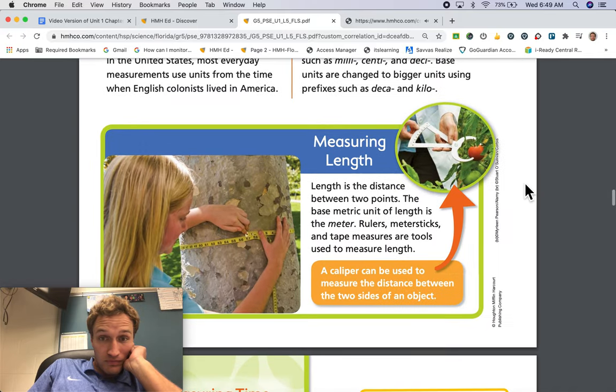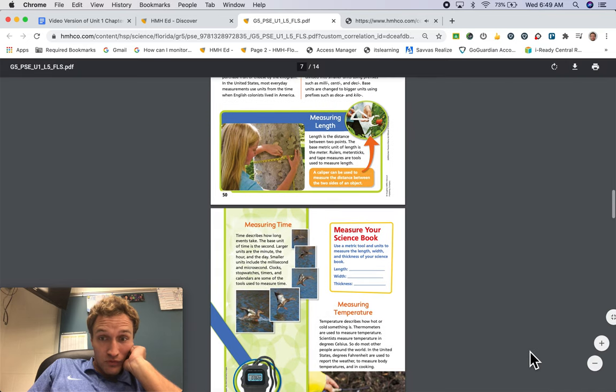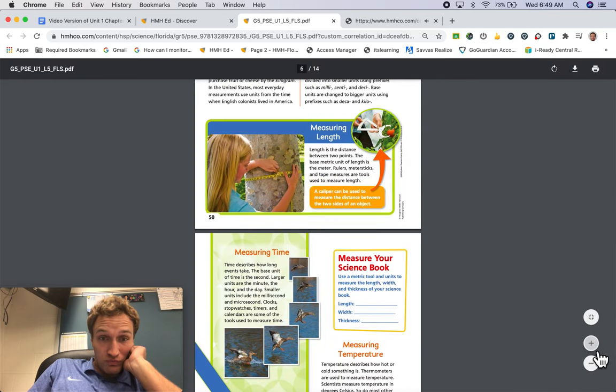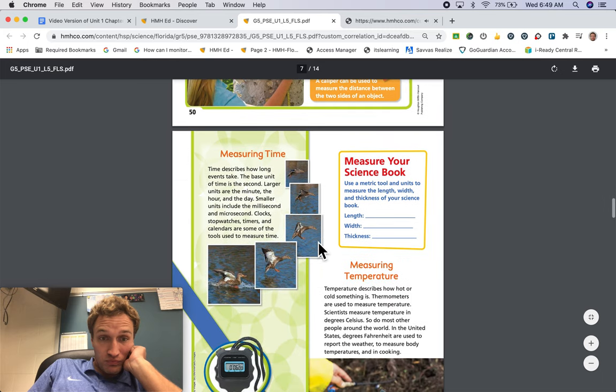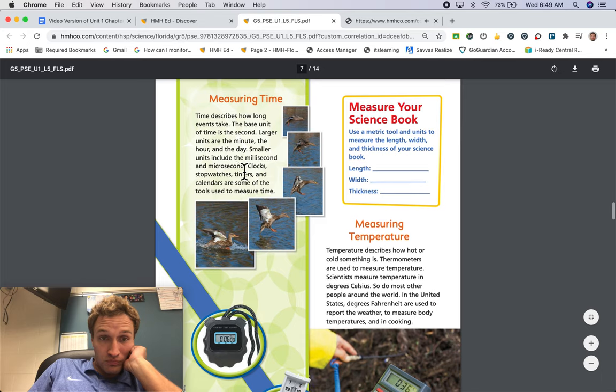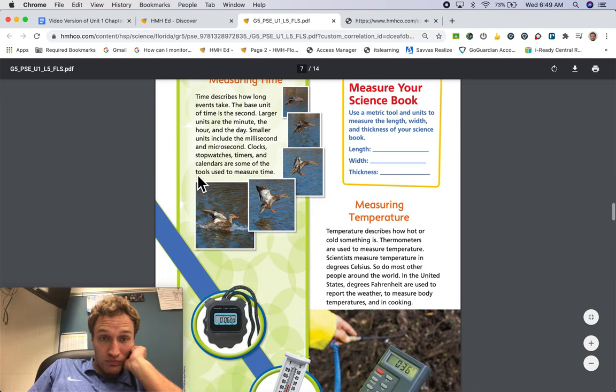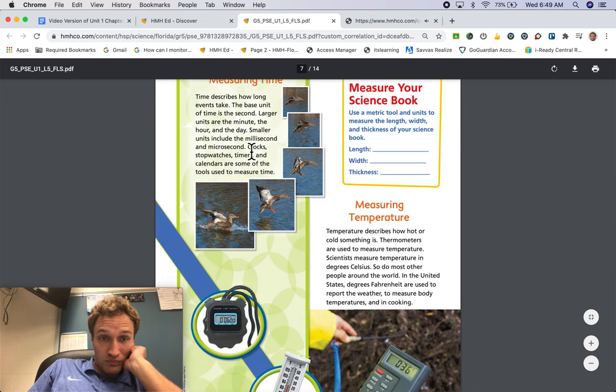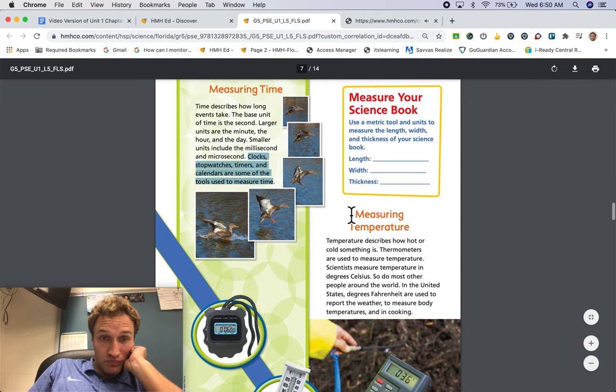Measuring time. Time describes how long events take. The base unit of time is the second. Larger units are the minute, the hour, and the day. Smaller units include the millisecond and the microsecond. Clocks, stopwatches, timers, and calendars are some of the tools used to measure time.